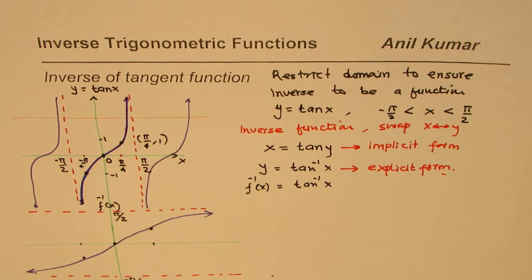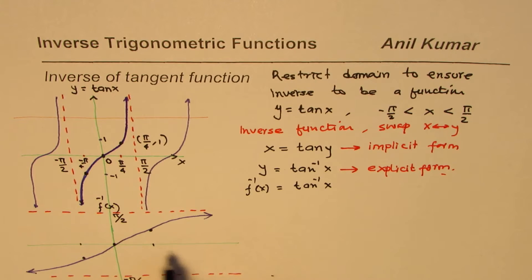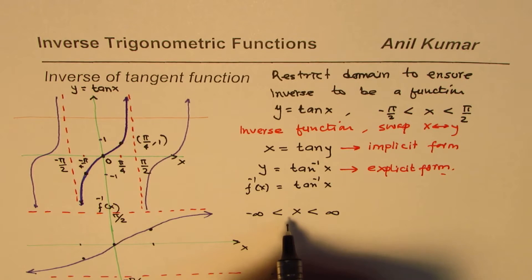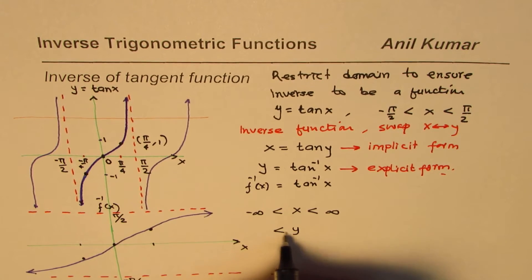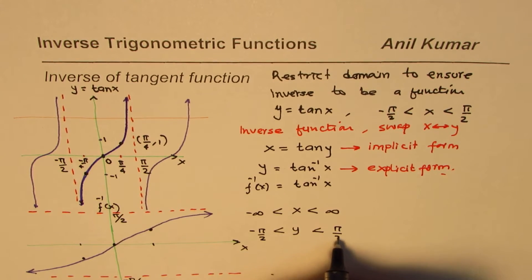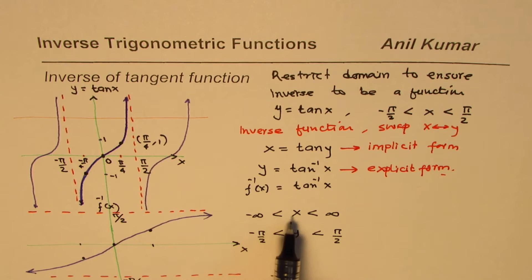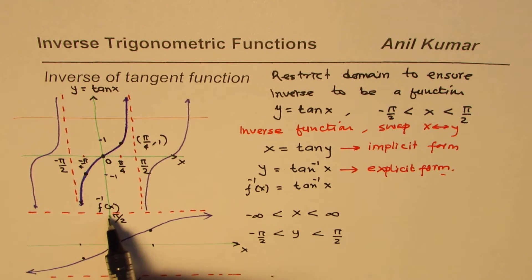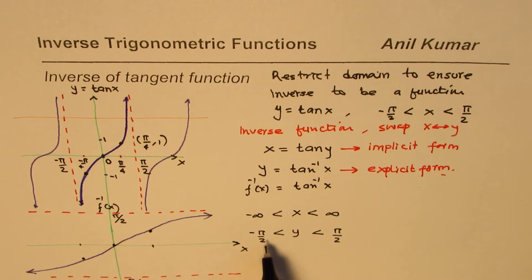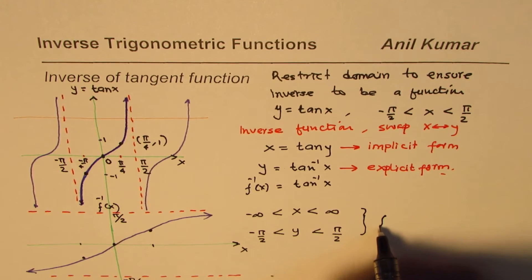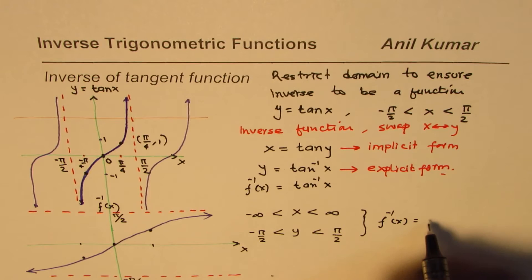In this inverse function, the x value ranges from −∞ to +∞, and the y value ranges from −π/2 to +π/2. So the domain of tan⁻¹(x) is all real numbers, and the range is from −π/2 to +π/2.